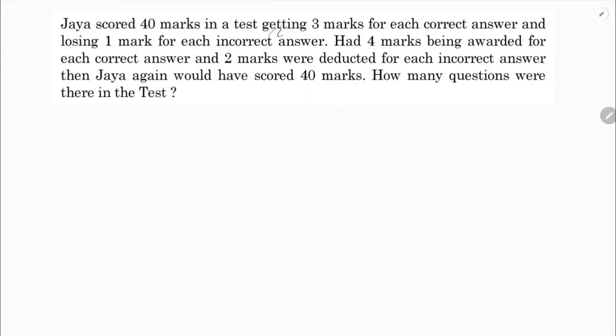Jaya scored 40 marks in a test, getting 3 marks for each correct answer and losing 1 mark for each incorrect answer. Had 4 marks being awarded for each correct answer and 2 marks were deducted for each incorrect answer, then Jaya again would have scored 40 marks. So how many questions were there in the test?